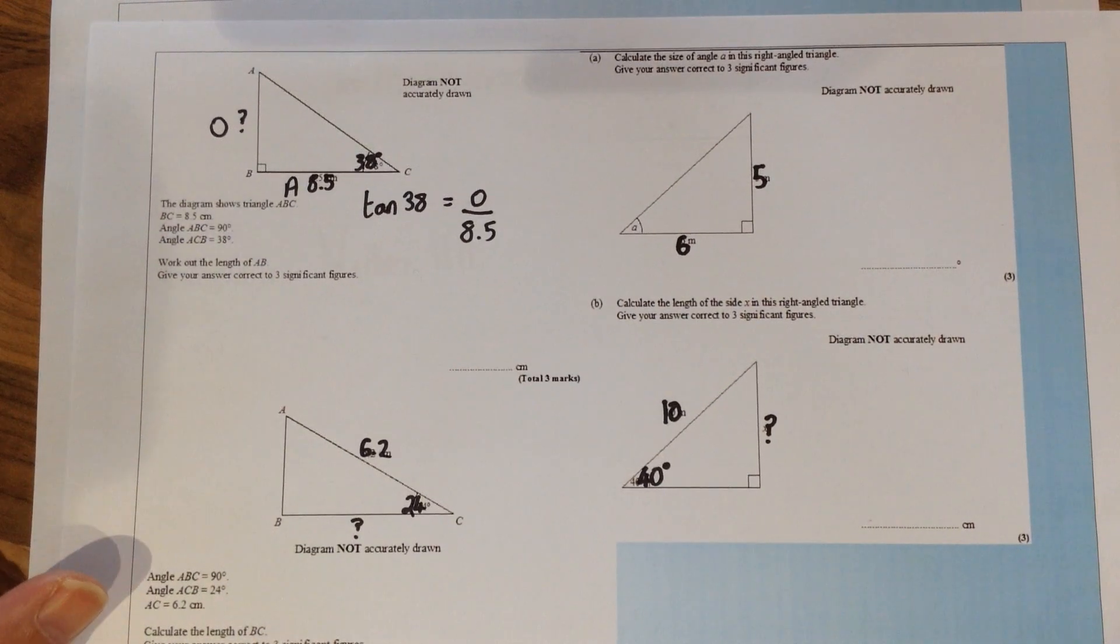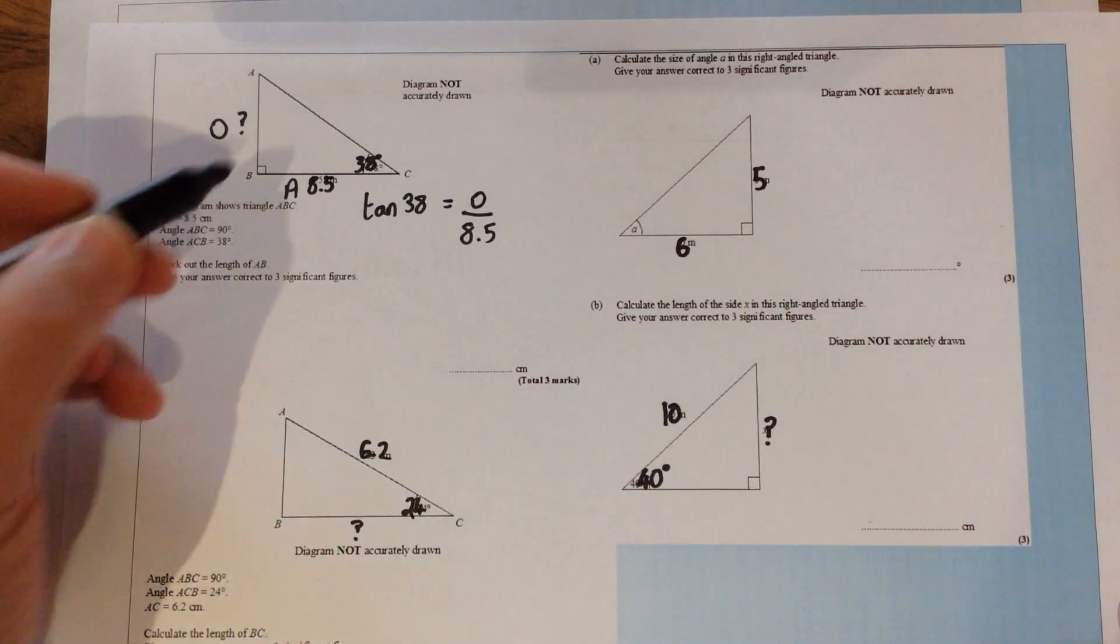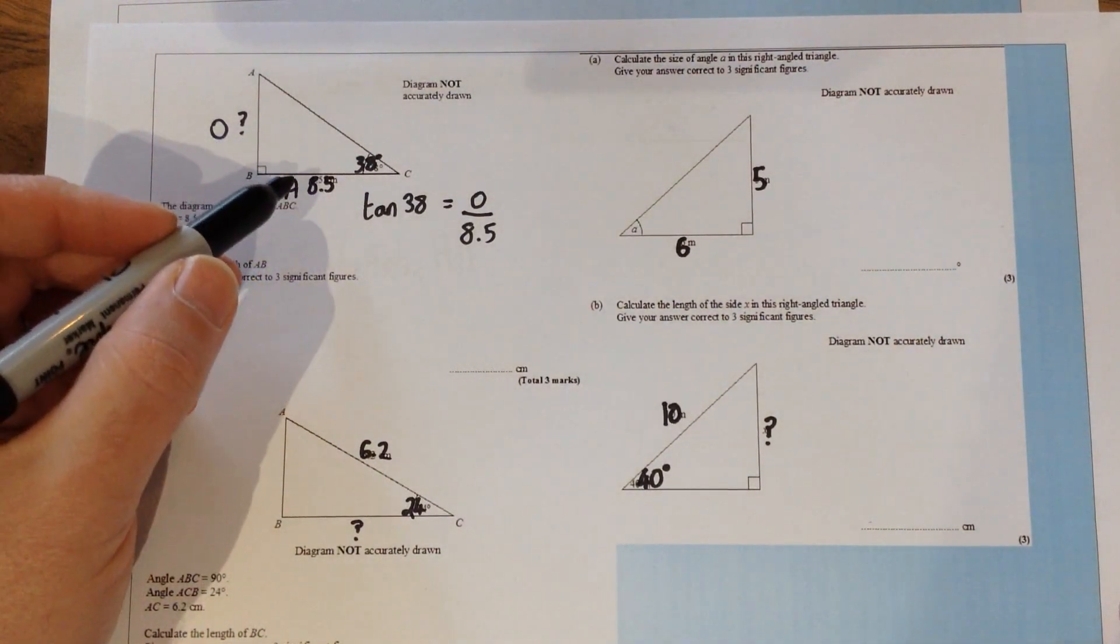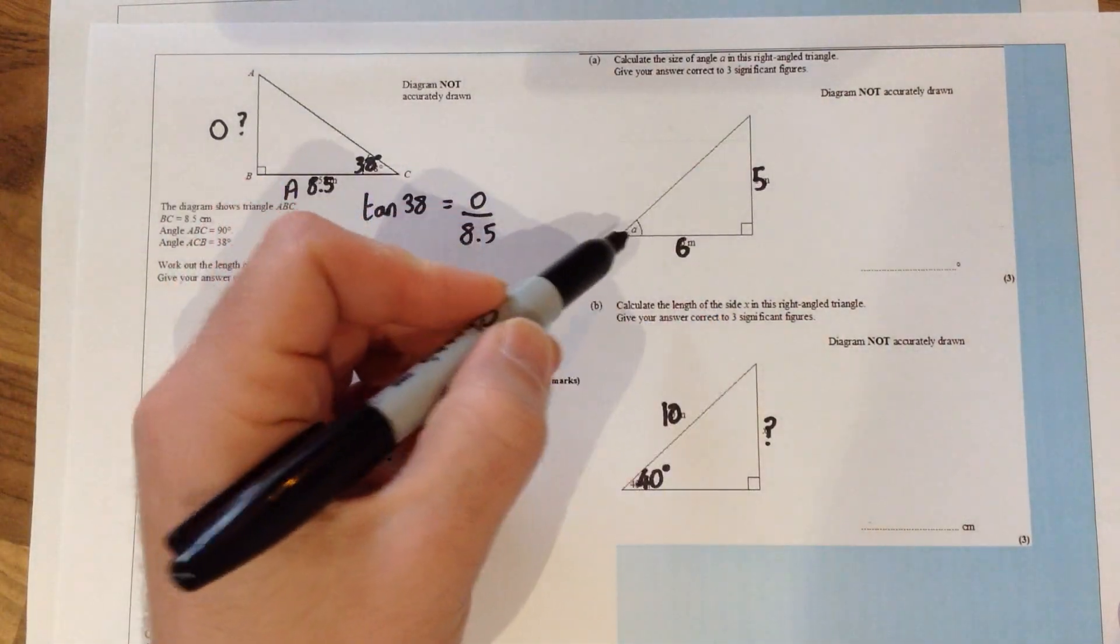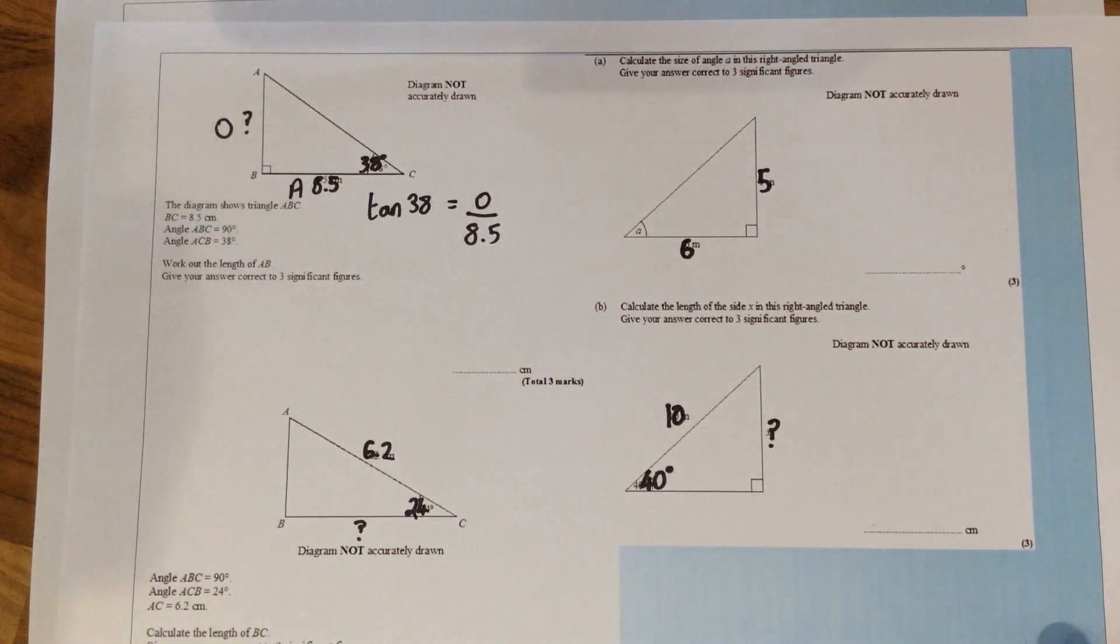The reason we know that these questions are all to do with trigonometry is the fact that on each question we are given information about side and angle, or we're given the sides and we are looking for the angle. So the fact that we've got information to do with angles that tells us trigonometry.